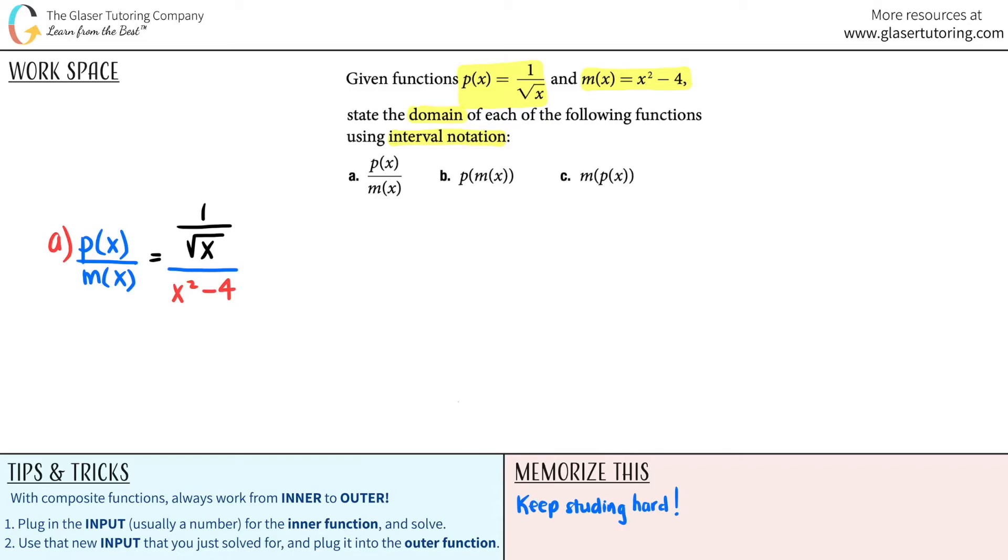And the m of x function was this one, x squared minus 4. Okay, so now we just have to look at this function that we made, and we just have to state the domain. Simple enough. So what we need to know is when we're doing domains, and by the way, if you guys are having a little bit more trouble with domain and understanding what a domain and how to find it, we have a whole playlist of just domain and range questions.